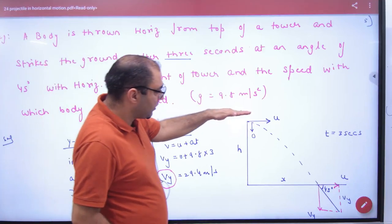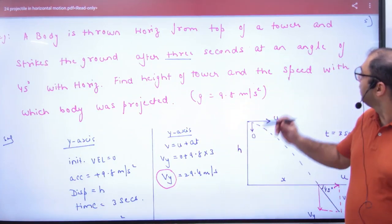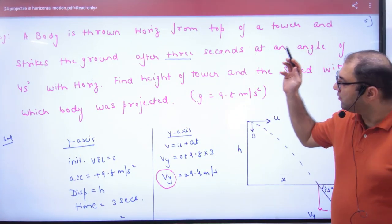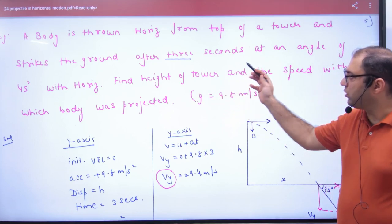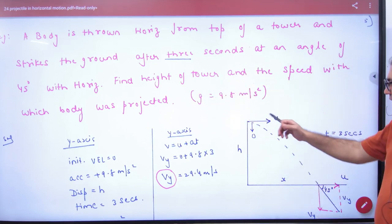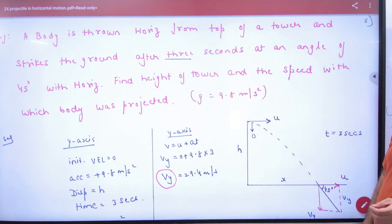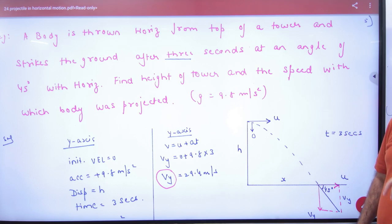A ball is thrown horizontally from the top of a tower and strikes the ground after 3 seconds. This time is given — normally time is asked in such problems, but here time is given.